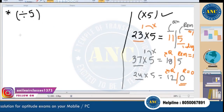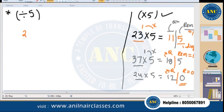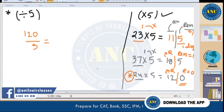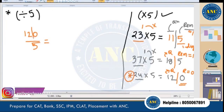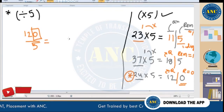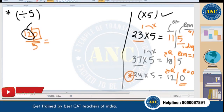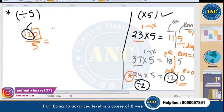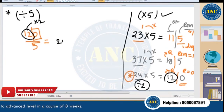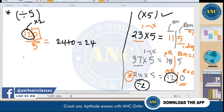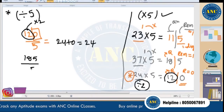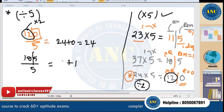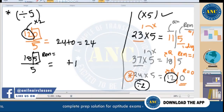Now converting to division by 5: for 120 ÷ 5, the last digit 0 means remainder is 0. The coefficient 12 came from dividing by 2, so multiply back: 12 × 2 = 24. Remainder 0, so answer is 24. For 185 ÷ 5: last digit is 5 meaning remainder is 1; 18 × 2 = 36, plus 1 = 37.